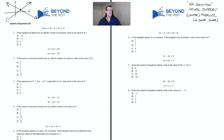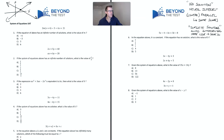So if no solution means our lines never intersect, then what do you think infinite solutions means? Infinite solutions means they always intersect. And if they're always intersecting — again, in a linear system — then they have to be the same line, which means they must have the same slopes. You'll notice that in both cases, whether it's no solution or infinite solutions, the slopes of the lines must be the same.